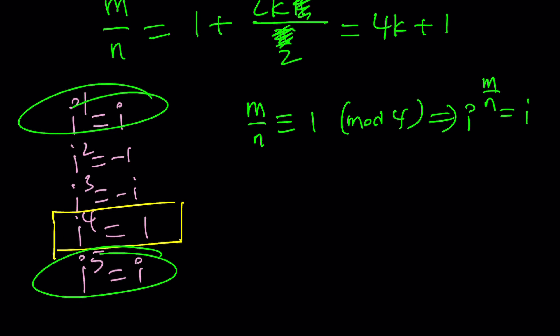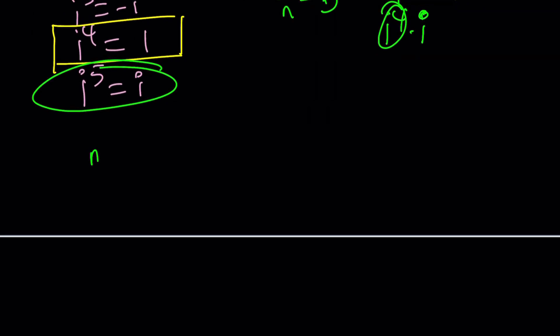Example: m over n is 1 when m and n are equal, we already talked about it. M over n can be 5, in which case i to the fifth power is going to be i again, because it's i to the fourth times i. This is 1, good. So how do we express this as a solution? Easy, you just have to set m over n equal to 4k plus 1, and then from here you can write m as n times 4k plus 1.